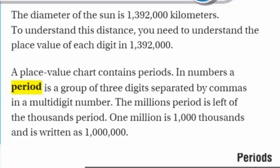One million is one thousand thousands and is written as one million: one, comma, zero, zero, zero, comma, zero, zero, zero. Okay, that was a mouthful. Okay, let's move down to our chart.